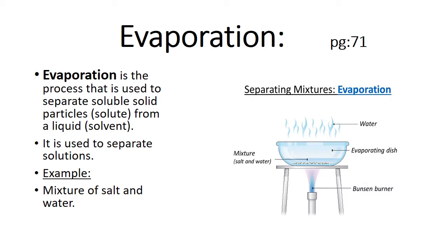For example, a mixture of salt and water. In evaporation, the method is used to separate solutions. When we dissolve salt in water, we know that salt is soluble in water — it completely dissolves. That is why we call them soluble solid particles. Solutions can only be separated through the process of evaporation.